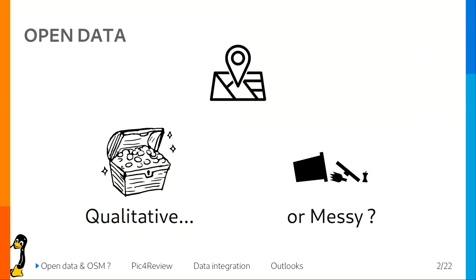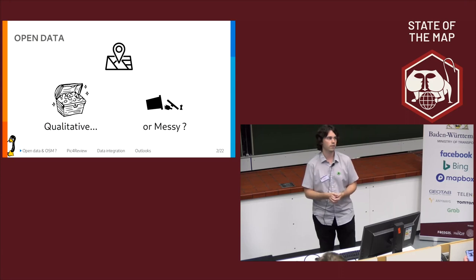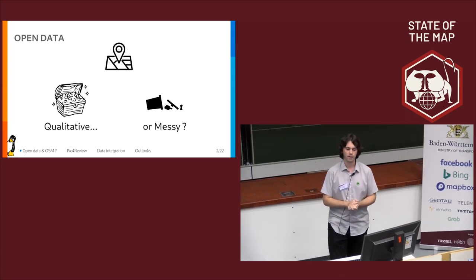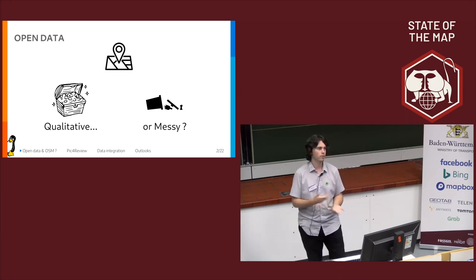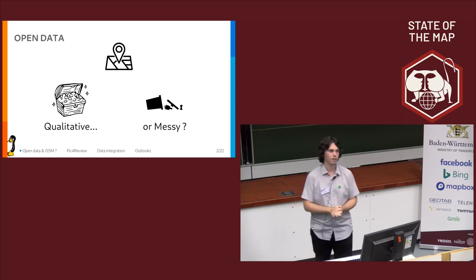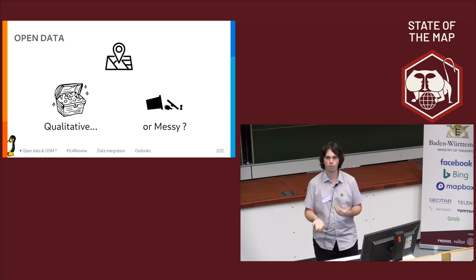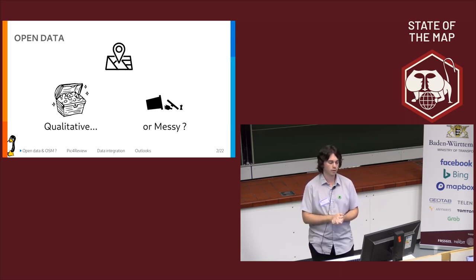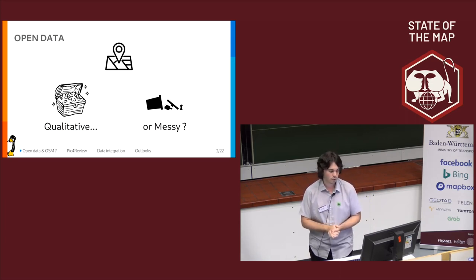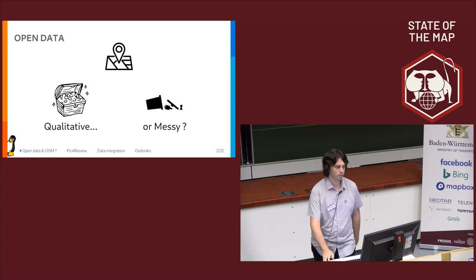In open data, you have sometimes very qualitative data — good quality, very exhaustive, very detailed — and sometimes you have more or less trash. You have things missing, you have no information in the metadata, so it's quite poor, and we have to sort out what is good and what is not good. So it's quite complicated to use sometimes.